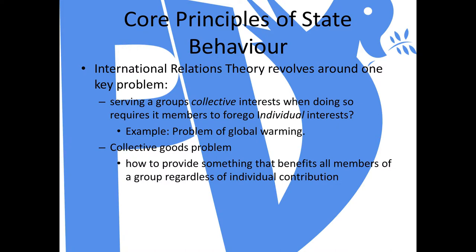The theories that come out of international relations revolve around solving one key problem. That is: on the international level, how does a group — such as two or more nations, or going down to two or more provinces, cities, or even two or more people — serve their collective interests when doing so requires group members to forego their individual interests?